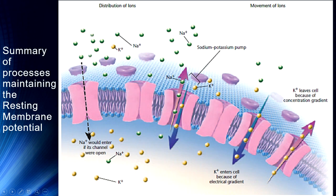To summarize the processes maintaining the resting potential: we have ion channels, different distributions of ions, the sodium-potassium pump, and concentration and electrical gradients. Potassium leaves the cell because of the concentration gradient, and enters the cell because of the electrical gradient. In our next lecture, we're going to talk about the generation of an action potential by these processes.